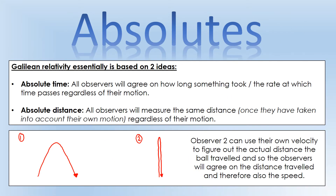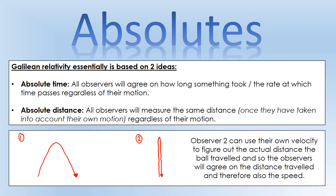Galilean relativity is based on two key ideas. The first is absolute time: all observers should agree on how long something took, or they should agree on the rate at which time passes, regardless of their motion. The idea of motion and relative motion is really important for special relativity.